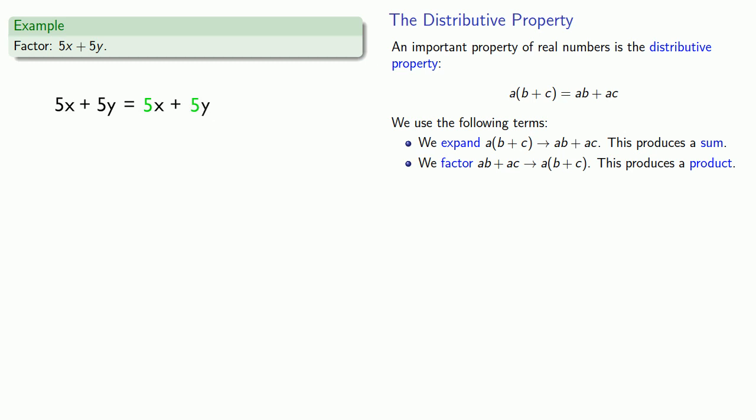A factor common to both terms is 5. We'll remove that common factor outside a set of parentheses, and inside we'll leave the other factors of the two terms, X and Y.